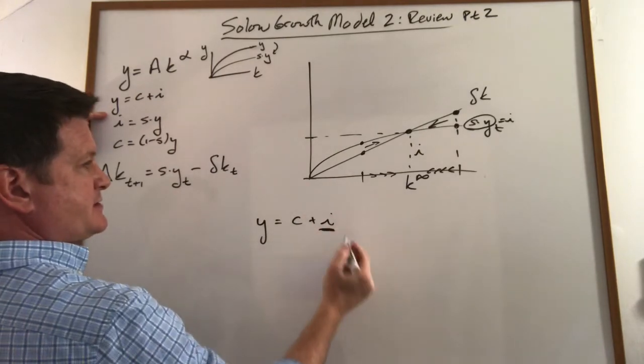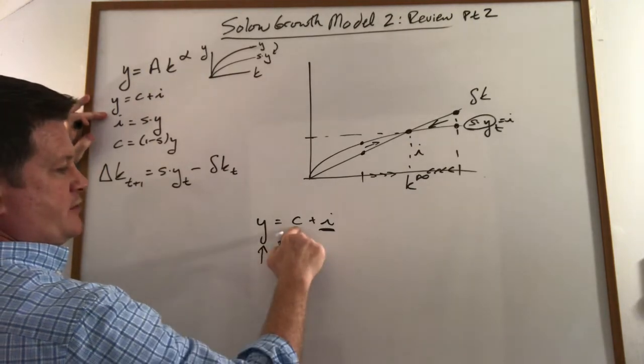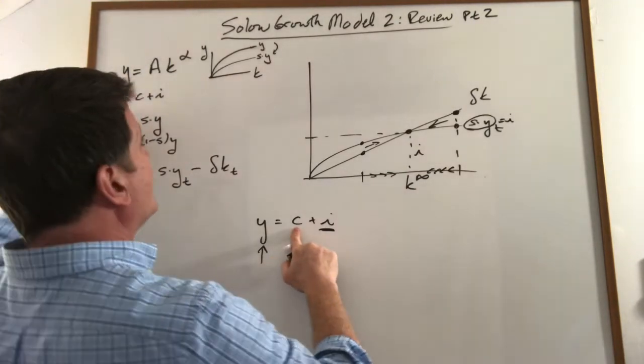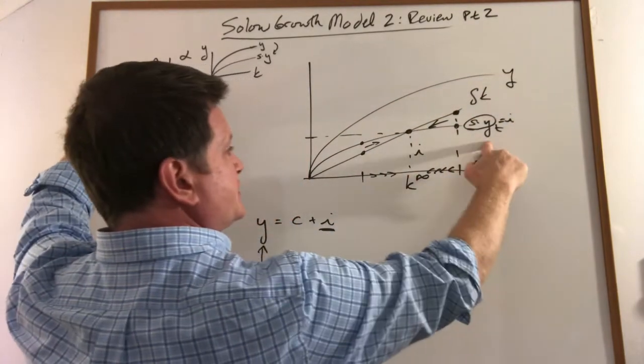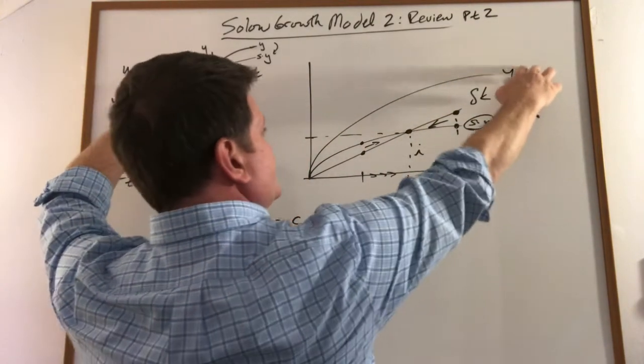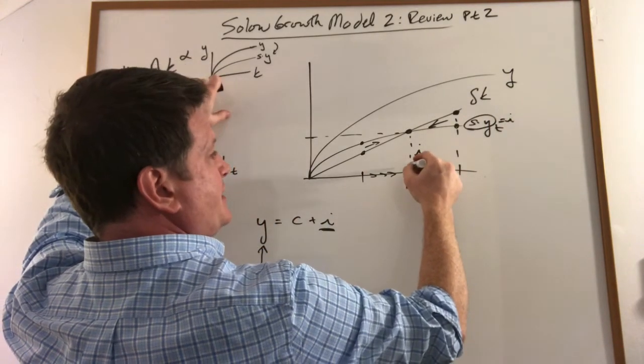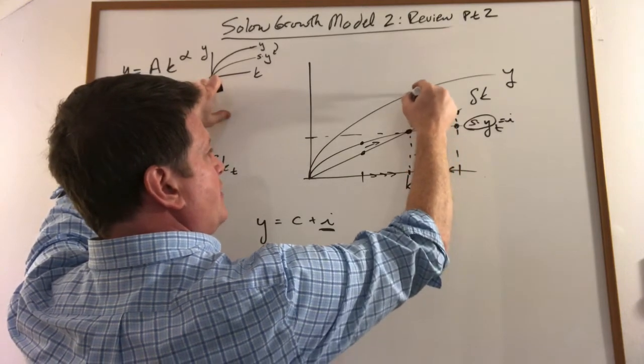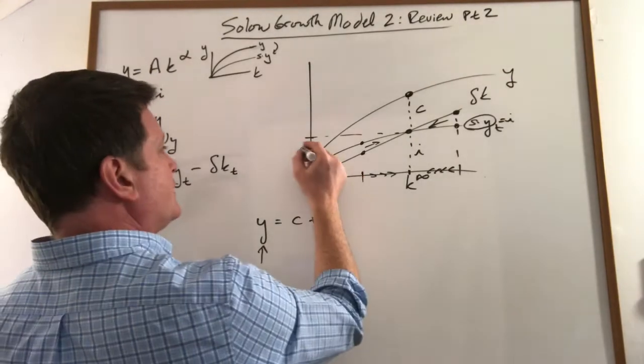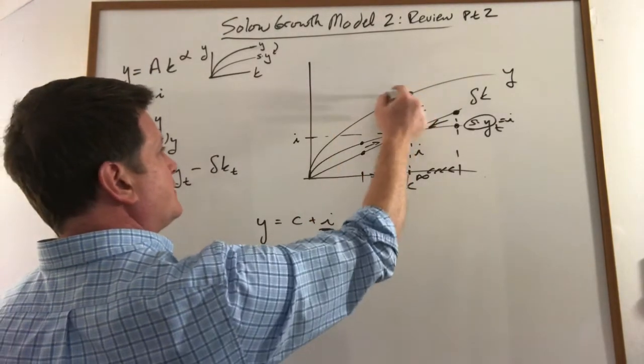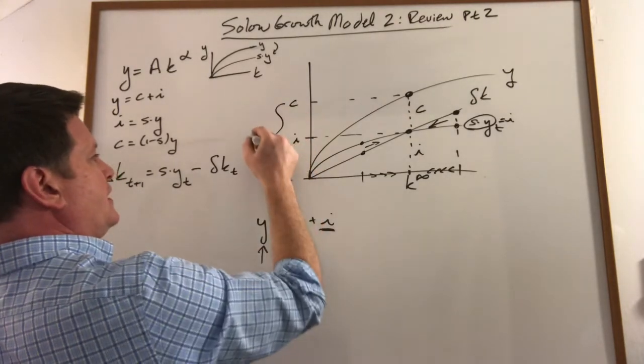We've got this piece, and if I knew this piece, the difference between the two would be consumption. I know Y looks just like this because this is just a fraction of the Y curve. So if I take my capital stock in steady state here and trace it all the way up to here, I can find the amount of consumption in our economy. So this is investment, this is consumption, and those two together is total GDP.